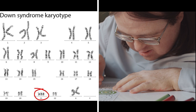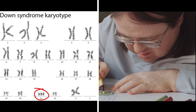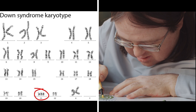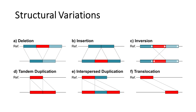We never hear about trisomy 1 or trisomy 2 in humans because these chromosomes are so large and contain so many genes that having abnormal copies of them is embryonically lethal. Another type of microscopic or sub-microscopic genetic variation in the human genome is structural variation.